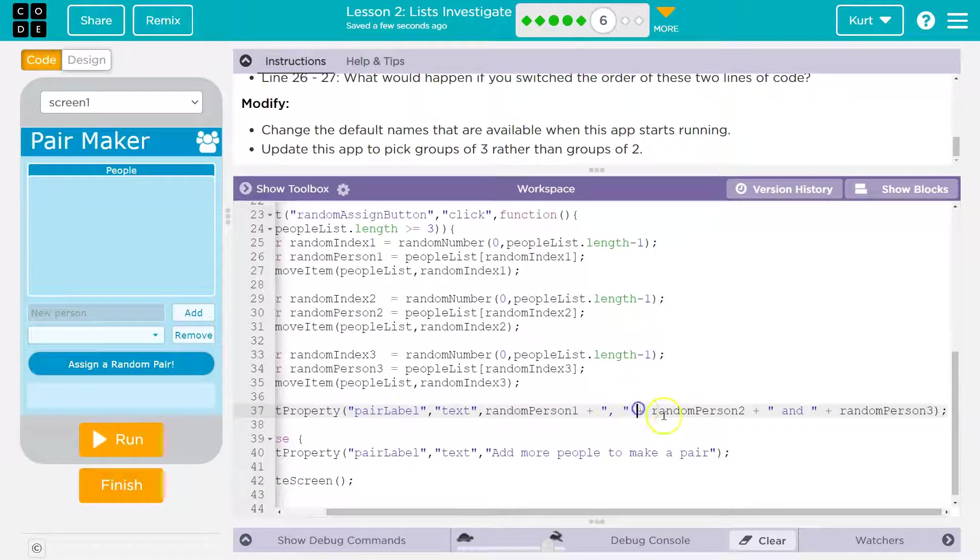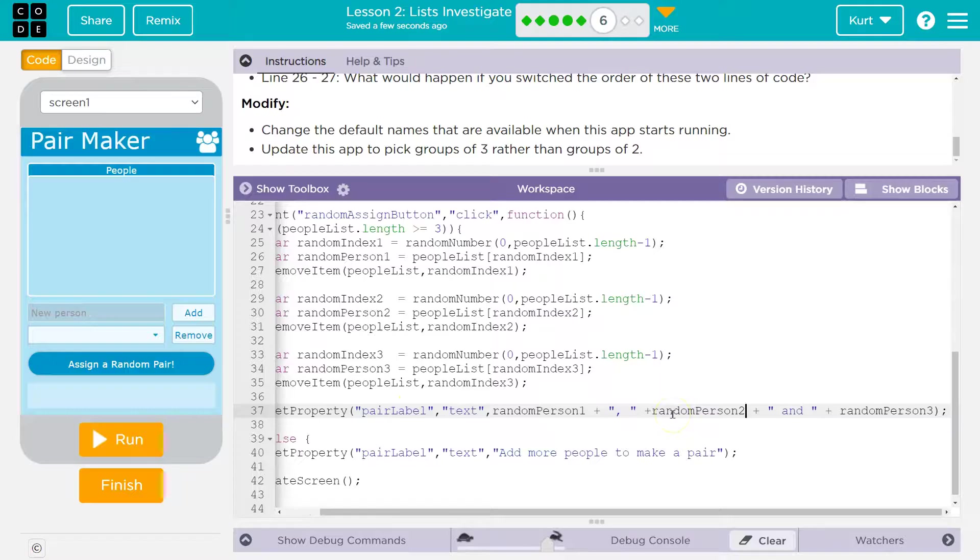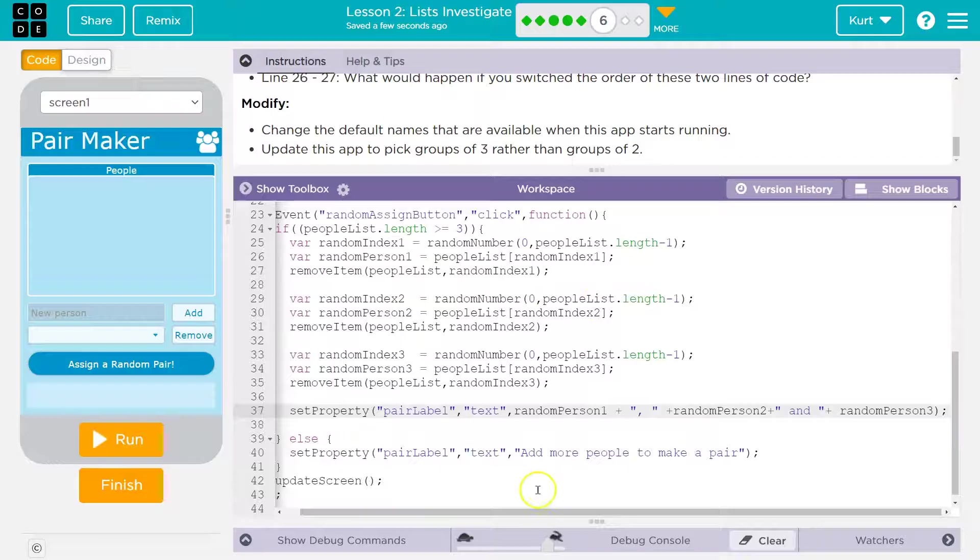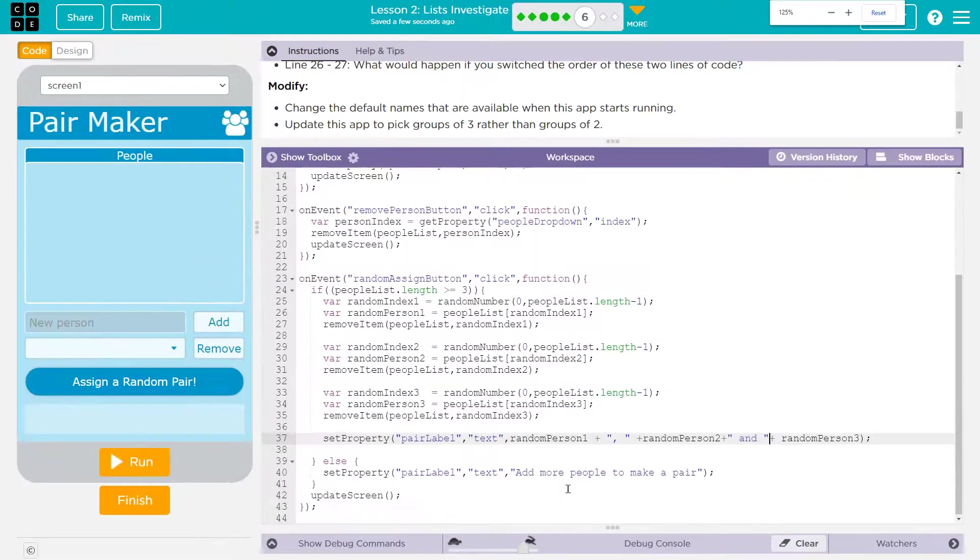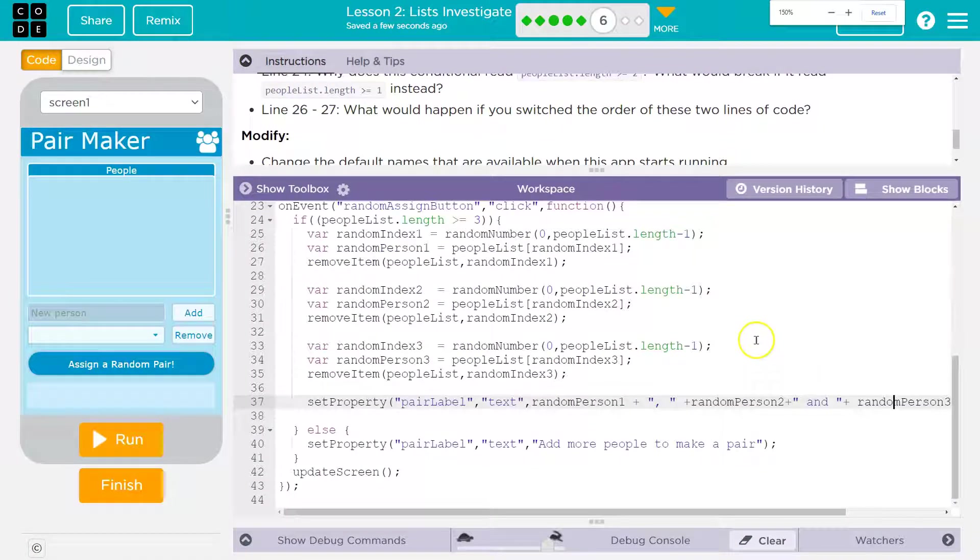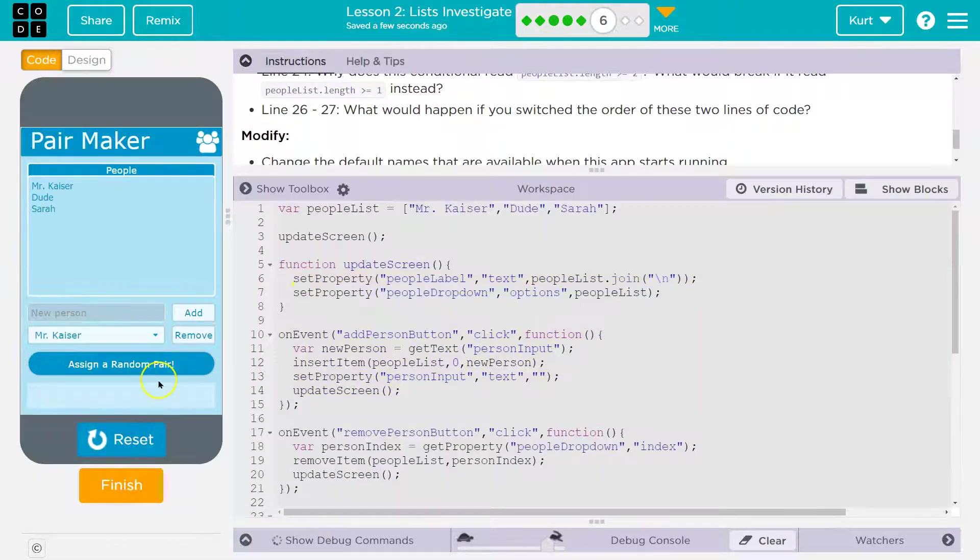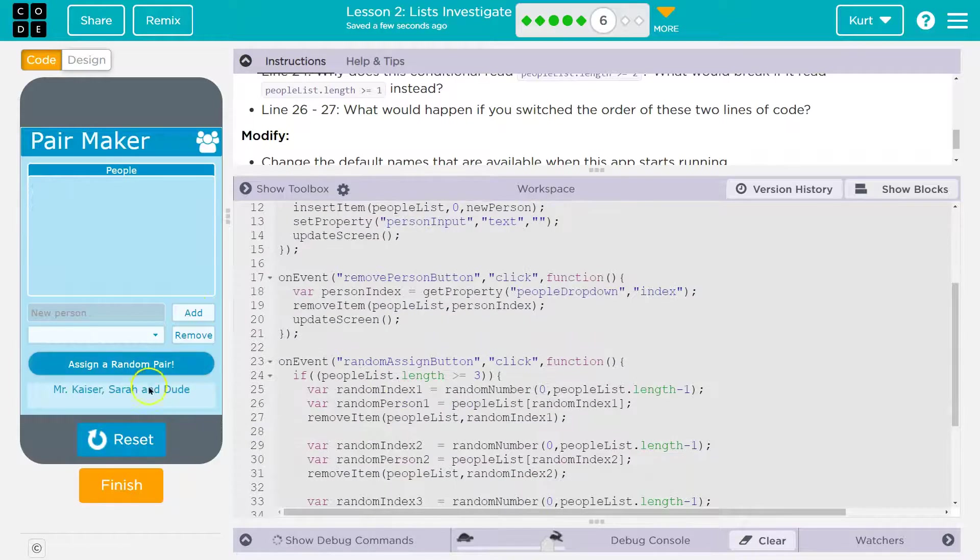It's kind of hard to see all of that here. I'm going to get rid of some of my unneeded stuff so we can see a bit more. Now you can see it all. All right. So I just put random person three way back here. Okay. So now let's see here. I don't think this will work yet, especially with removal, but let's hit run. Mr. Kaiser. Okay. Wait, assign a random pair. Boom. Three people. Yeah.